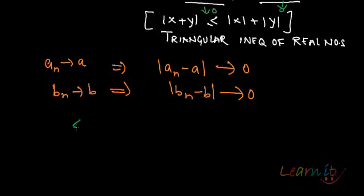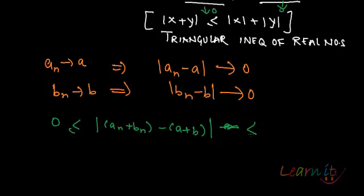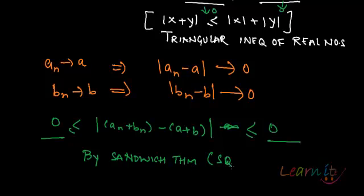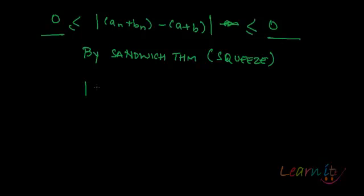That means the sum will tend to 0. So what I have is that An plus Bn minus A plus B is contained between two terms which both are tending towards 0, tending towards 0, and that would mean by sandwich theorem or your squeeze theorem as we call it, squeeze theorem, that An plus Bn minus A plus B together they also tend to 0.